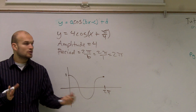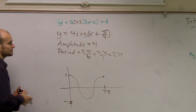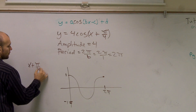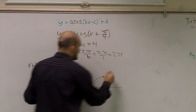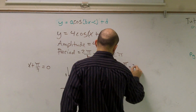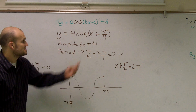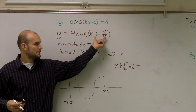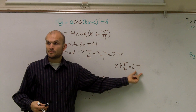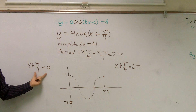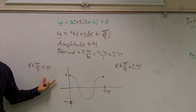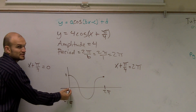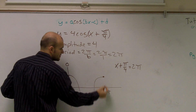If I'm going to shift it, one way to determine our shift is to take whatever's inside our parentheses and set it equal to the endpoints of one period. So we say x plus pi over four equals zero, and then x plus pi over four equals two pi. We take whatever's inside the function and set it equal to the endpoints zero and two pi.